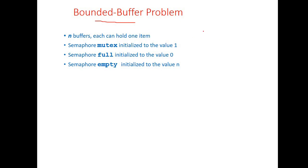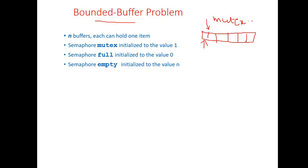In the Bounded Buffer problem there is a buffer of size n. There is a producer and a consumer. The producer produces an element into the buffer and the consumer consumes an element from the buffer. Since the buffer is accessible by both producer and consumer, there is a control variable called mutex. The mutex variable is either 0 or 1: 1 indicates the buffer is available for access, 0 indicates it is not.